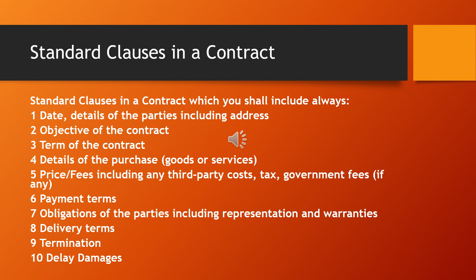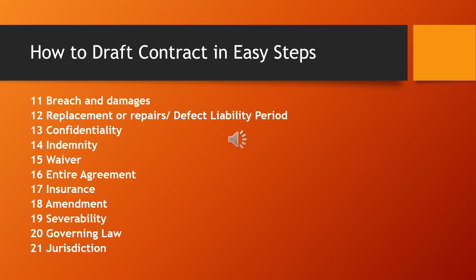Ten, the delay damages — if there is any delay in the services or in the delivery of the goods, you talk about the delay damages. Eleven, you could also include the breach of contract: if any party commits a breach and what damages the other party is going to receive. Twelve, it's about the replacement or repairs, or if it is a construction project, you can talk about the defect liability period.